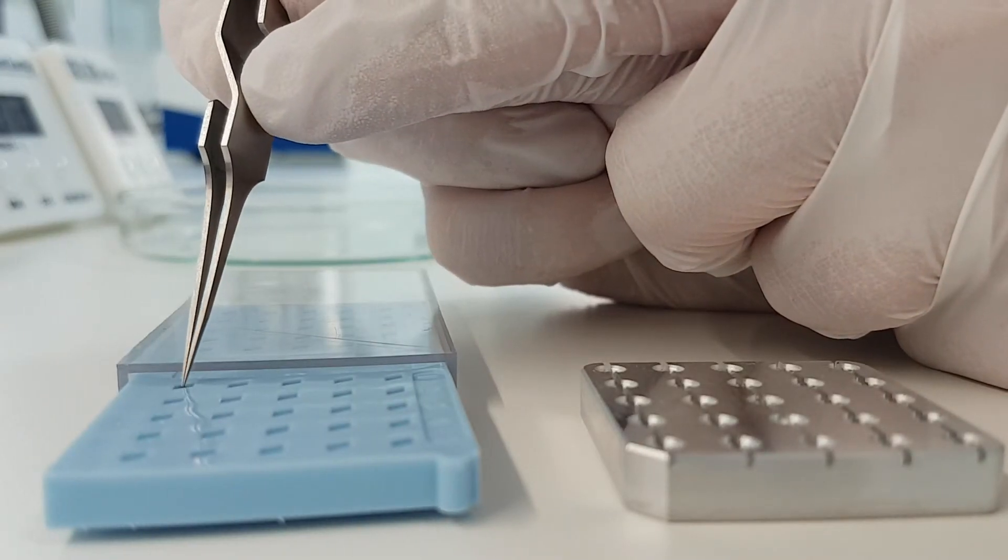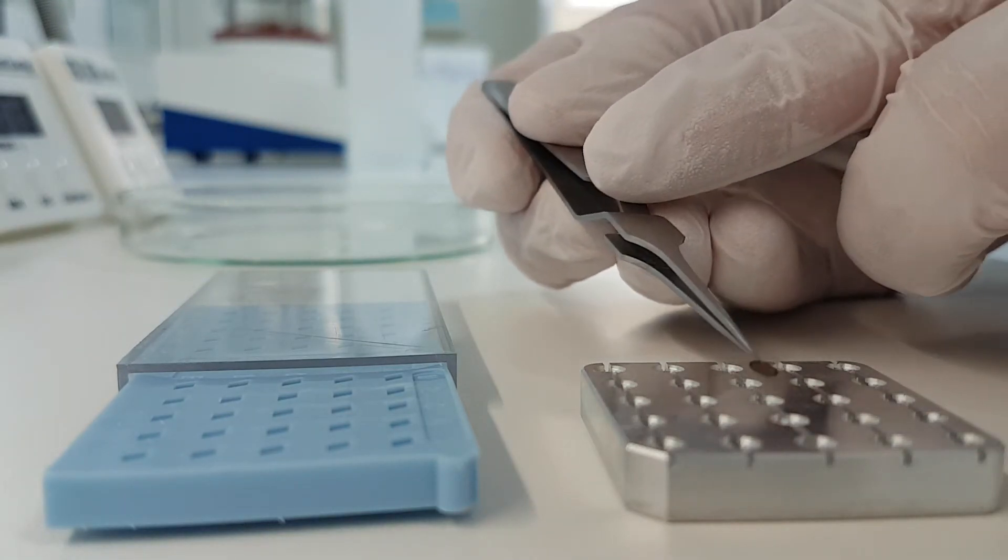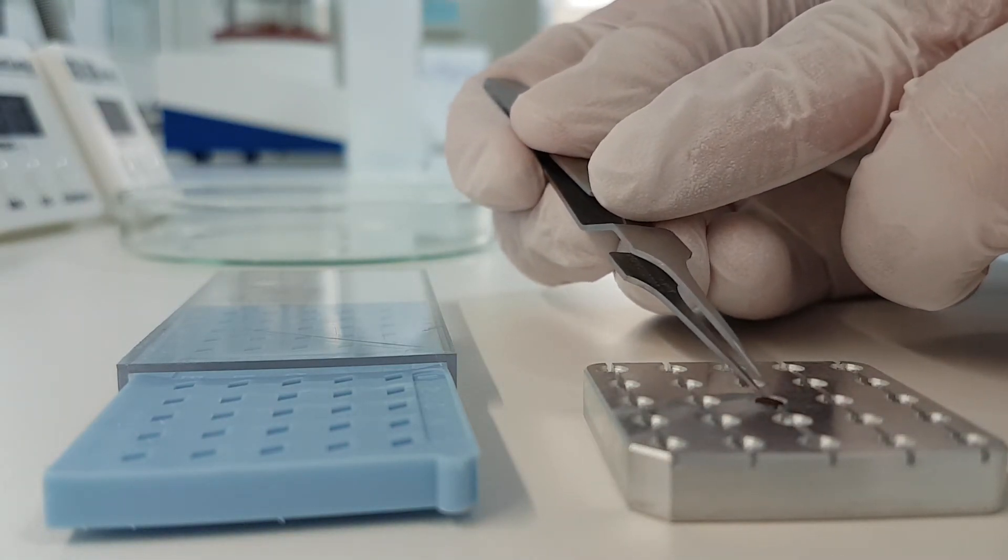Using the supplied tweezers, pick up the grid by the edge, avoiding the mesh area. Place grids onto the metal support.